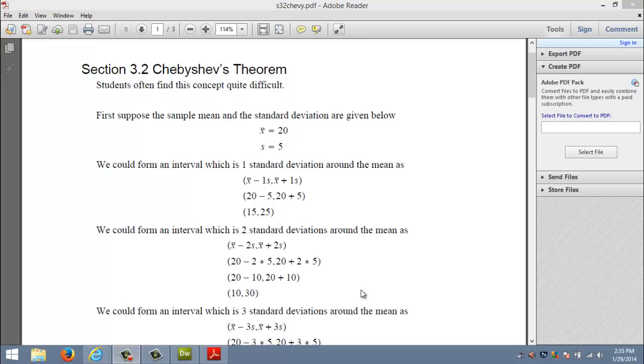I could do the same thing but go two standard deviations. If the standard deviation is 5, then 2 times that is 10. Again I'm starting at 20 and going up by 10 and down by 10. That gives me a wider interval, namely from 10 to 30. That is two standard deviations around the mean.